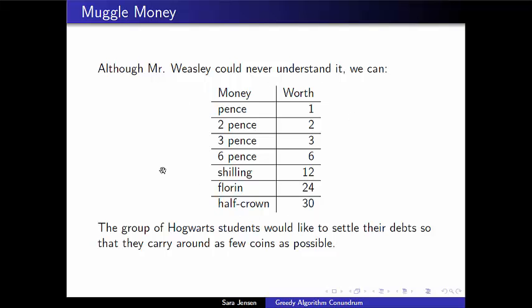So this is the money system we're going to be dealing with. We have a bunch of Harry Potter characters with debts to pay to one another. When we pay these debts, we'll use muggle money. We don't want a whole bunch of loose pence — if you owe me 110 pence, I want it in a handful of fun, vibrant coins, and I want to carry as few coins as I possibly can.